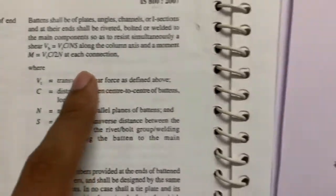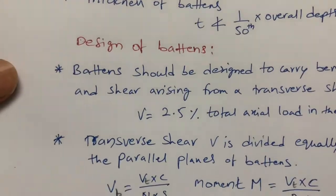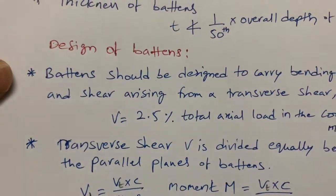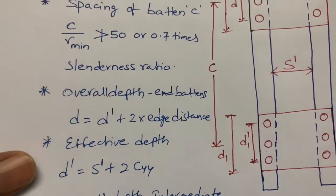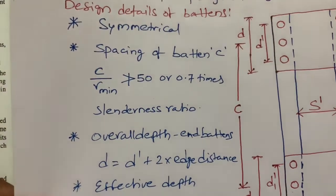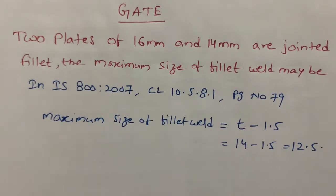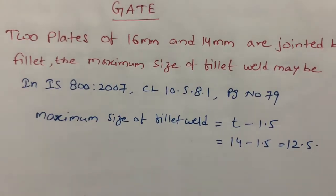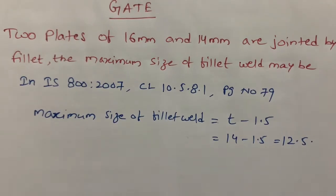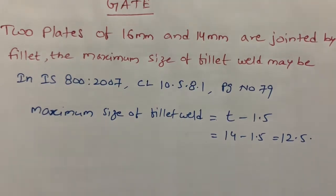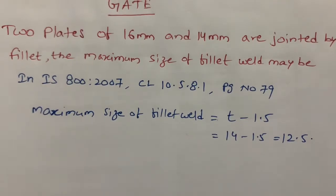These are the design parameters for calculating the battens. In the next video I'll show you a solid example problem on battens. Now I'm going to explain a gate exam example problem: two plates of 16 mm and 14 mm are joined by fillet weld — what is the maximum size of the weld?